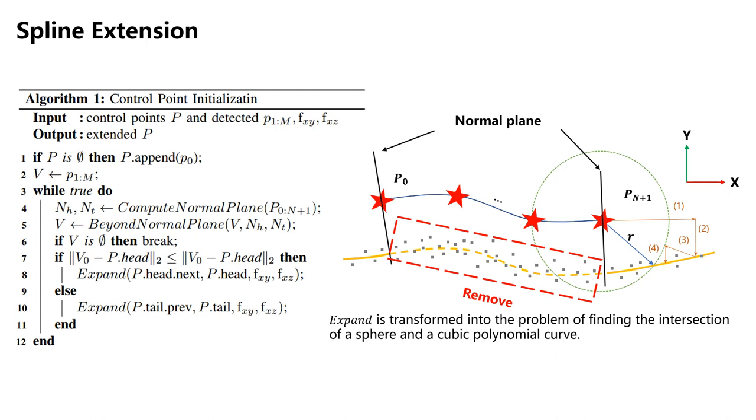A good pose is beneficial for spline optimization. However, initializing good control points is even more important, especially when initializing the spline or adding new control points. To achieve this, we first perform local polynomial curve fitting on the newly acquired observation points. Then, we find the intersection points between a sphere centered at the end control point and the fitted polynomial curve. These intersection points serve as new control points, and the initialized observations are removed. This engineering process iterates alternately until all observation points are used for control point initialization.